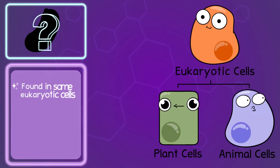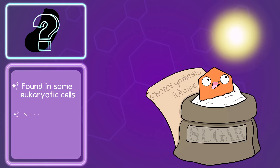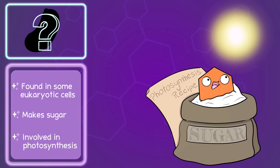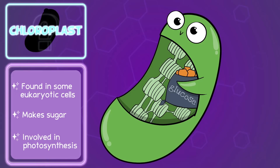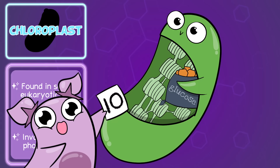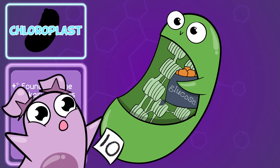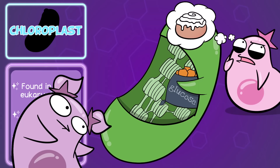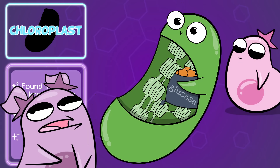You find this in eukaryotic cells, but not all eukaryotic cells — for example, it's in plant cells, but not animal cells. It's all about making sugar, so it's for photosynthesis. It's the chloroplast! 10 out of 10. Total cinnamon roll. And it makes sugar — what's not to like? Cinnamon roll? It's a reference to... you know what, never mind.